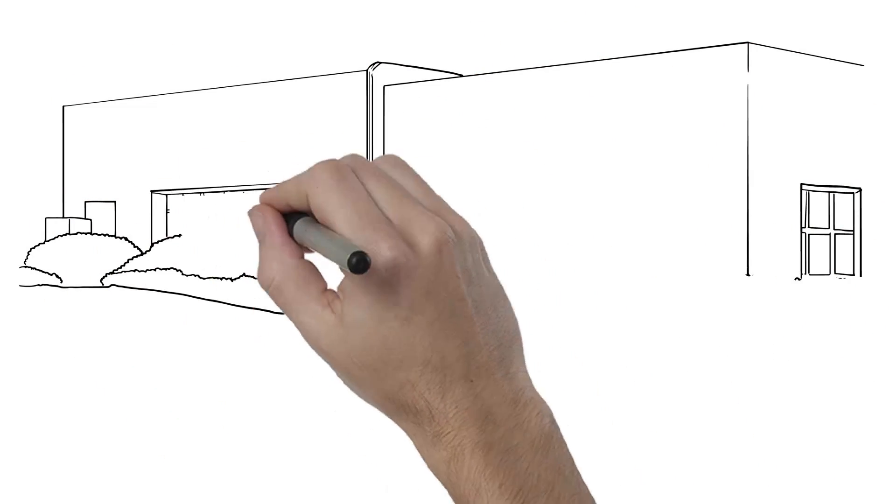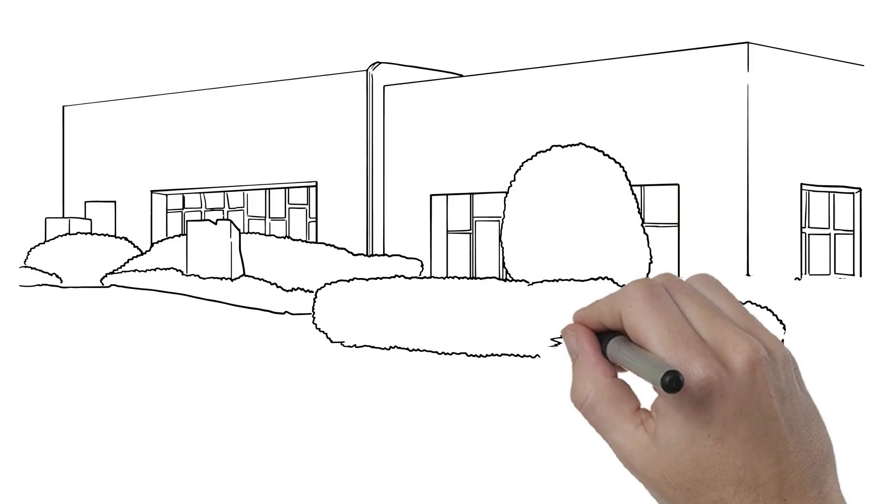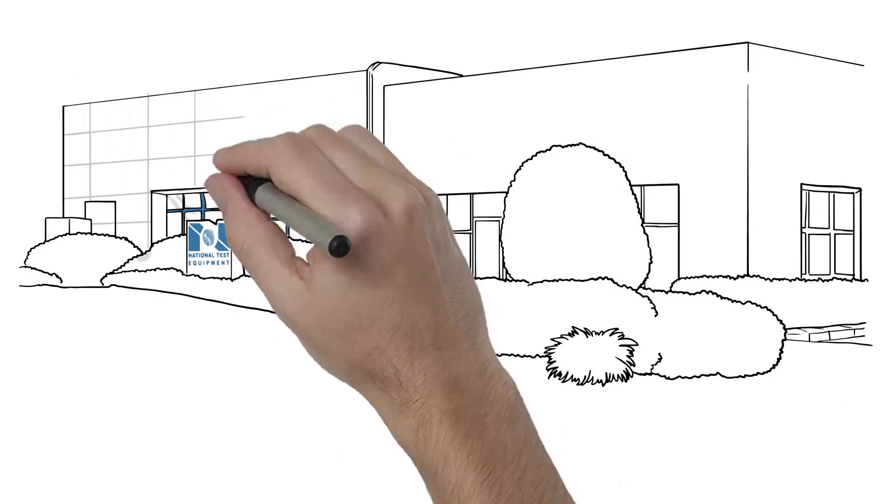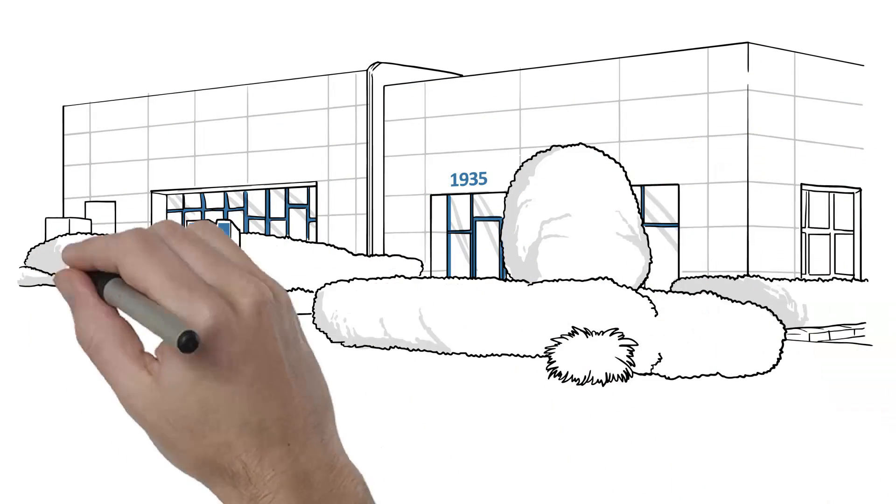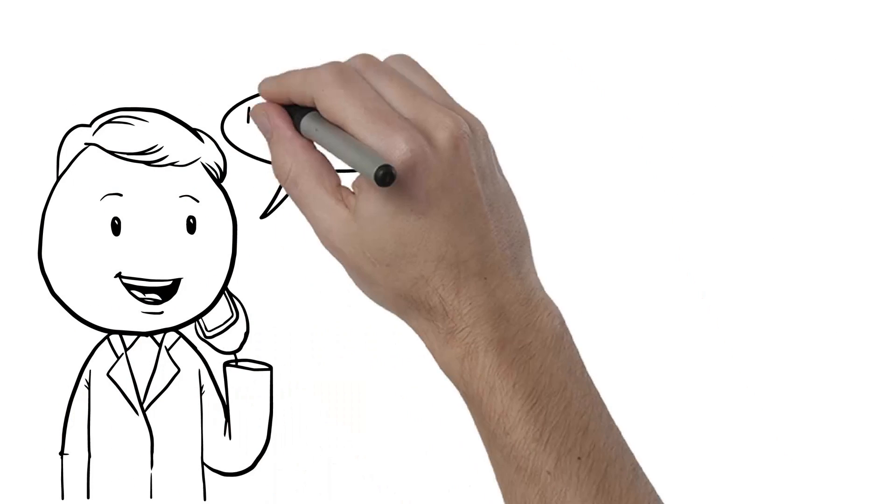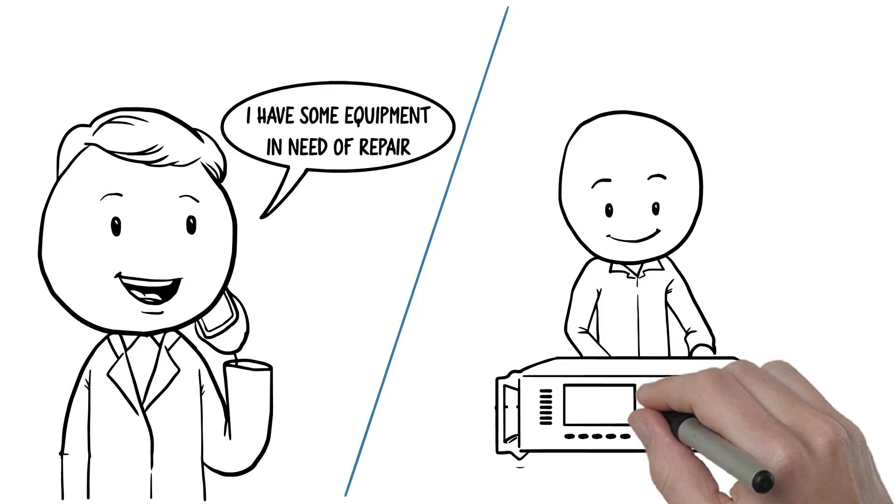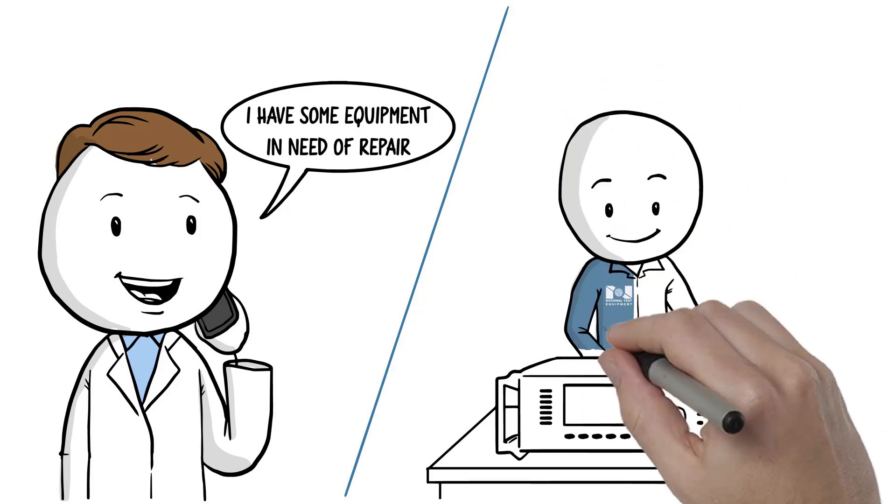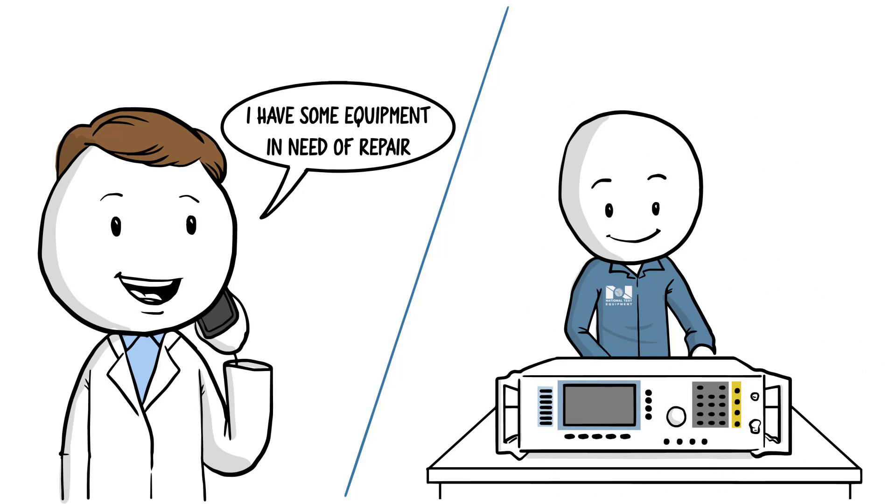National Test Equipment, an ISO 17025 accredited calibration lab that specializes in the sale, rental and repair of high-end electronic test measurement equipment. Bob can utilize National Test Equipment's industry-leading repair expertise to keep his existing manufacturing lines running at a fraction of what it would cost for the same services from the OEM.